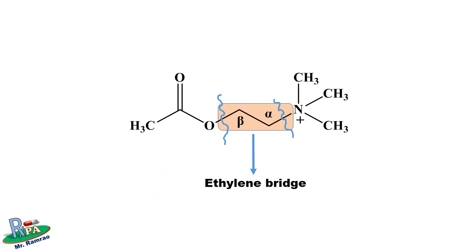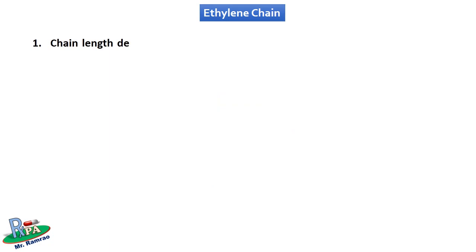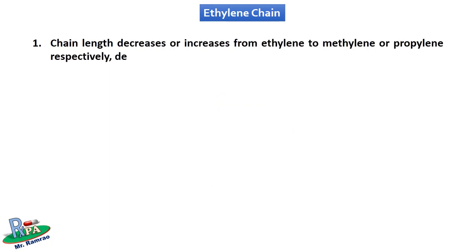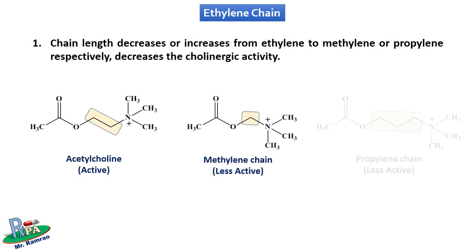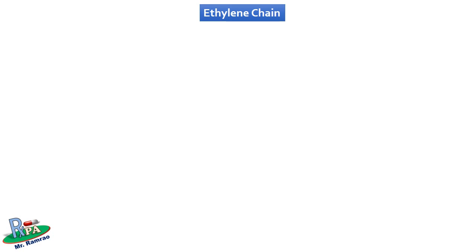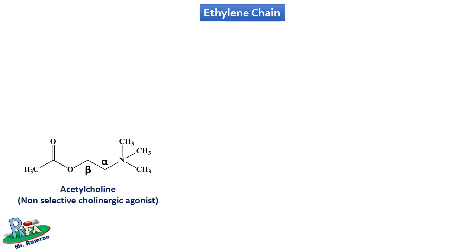The first point for the ethylene bridge is that decreasing or increasing the chain length — from ethylene to methylene or propylene respectively — decreases the cholinergic activity. That means the distance between the nitrogen and the ester oxygen must be exactly two carbons in length, as shown in the structure.